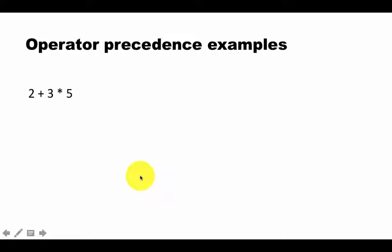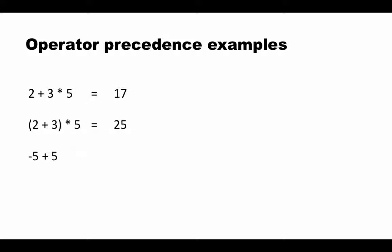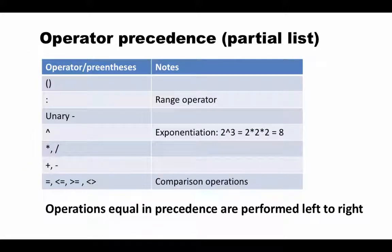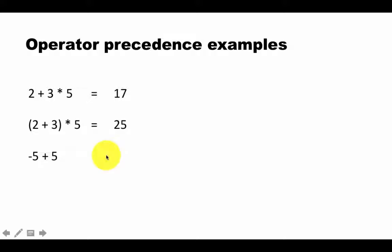Let's look at some examples of operator precedence. In the expression 2 plus 3 times 5, multiplication has higher precedence, so the result is 3 times 5 equals 15, plus 2 equals 17. With parentheses: (2 plus 3) times 5 — now 2 plus 3 is done first, giving 5 times 5 equals 25. For minus 5 plus 5: the unary minus has higher precedence than plus, so it's applied to just 5 first, giving minus 5 plus 5, which equals 0.